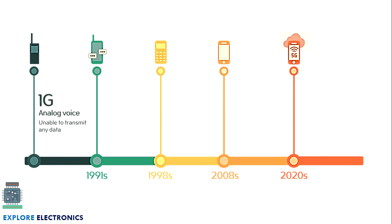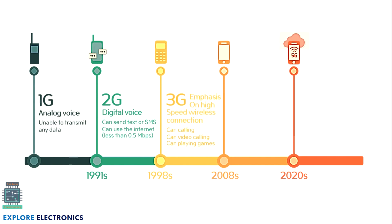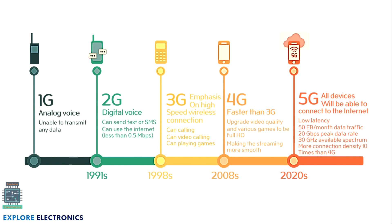As we know, in 1G we have only analog voice, and in 2G we can transmit text through SMS. Now in 3G, it is a high speed connection where video calling and internet evolved with a high speed network, and it is allowed to play online games. In 4G, it is very much faster compared to 3G, where full HD video and live streaming became smooth. And in 5G, we have very high speed with 30 GHz available spectrum and 10 times more connection density than 4G. This is a brief introduction to the generations of wireless communication.